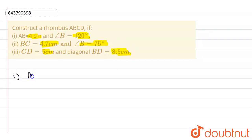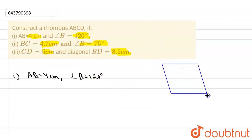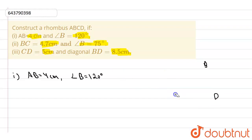For the first construction, we are given AB=4cm and angle B=120°. In a rhombus all sides are equal. The rhombus looks like a tilted shape — let's call its vertices A, B, C, D. We need to construct all three cases. First, we make the angle of 120 degrees, so draw line AB.